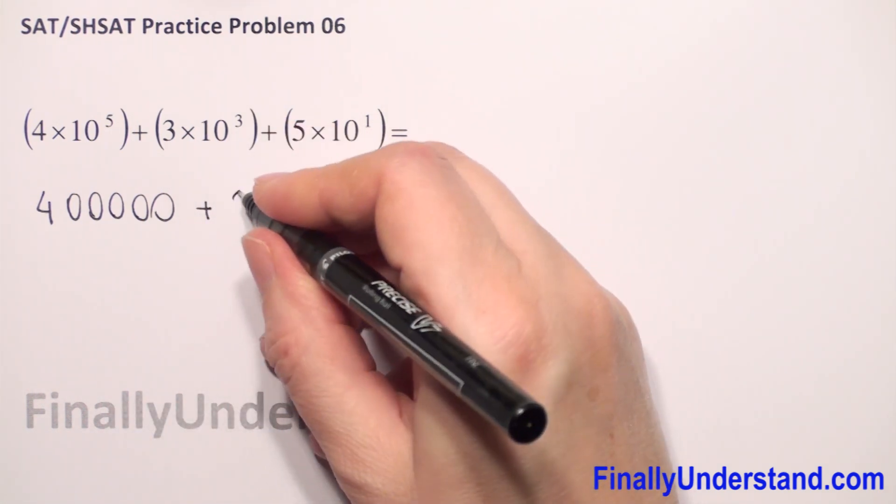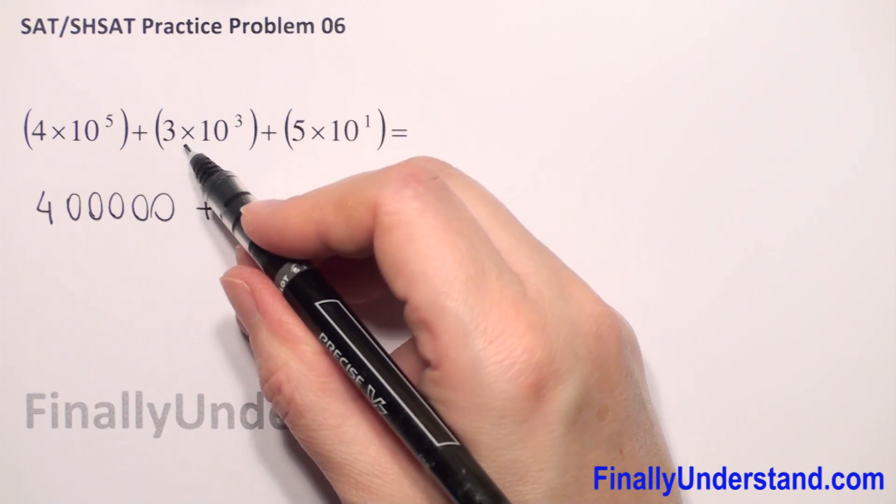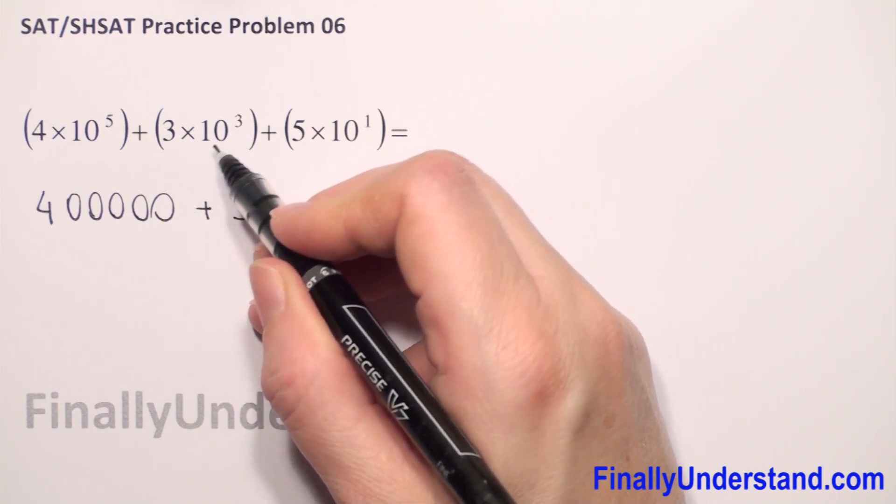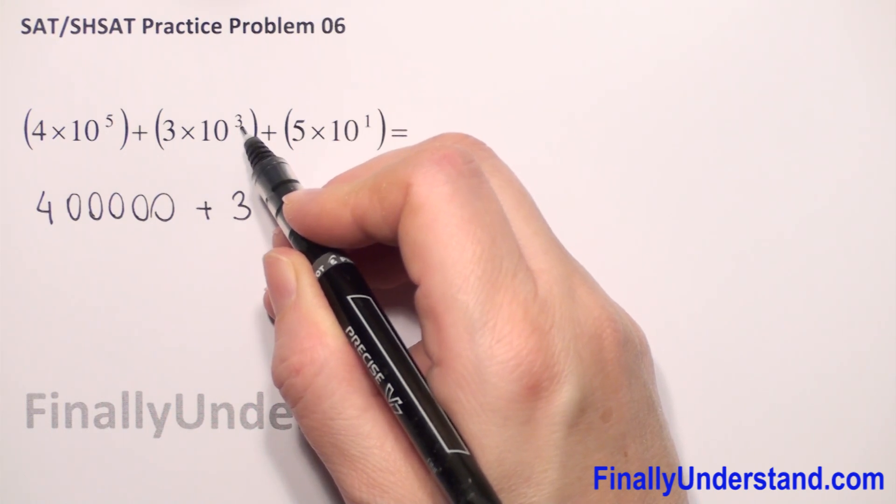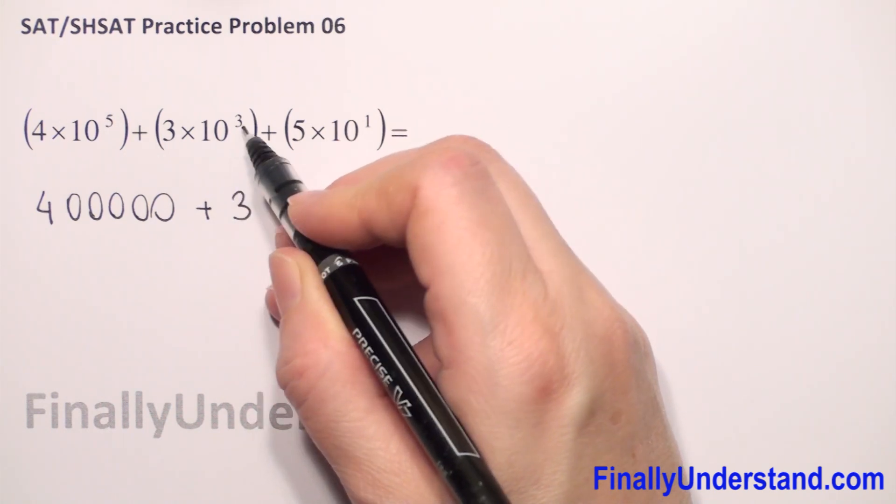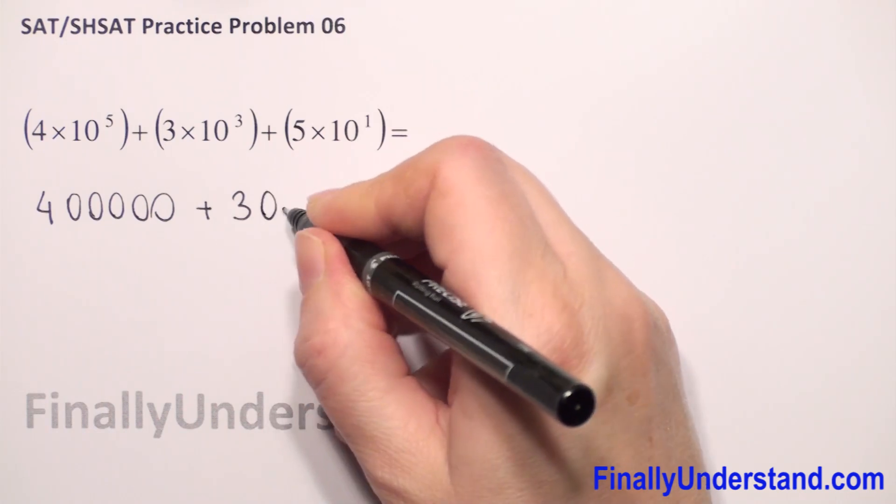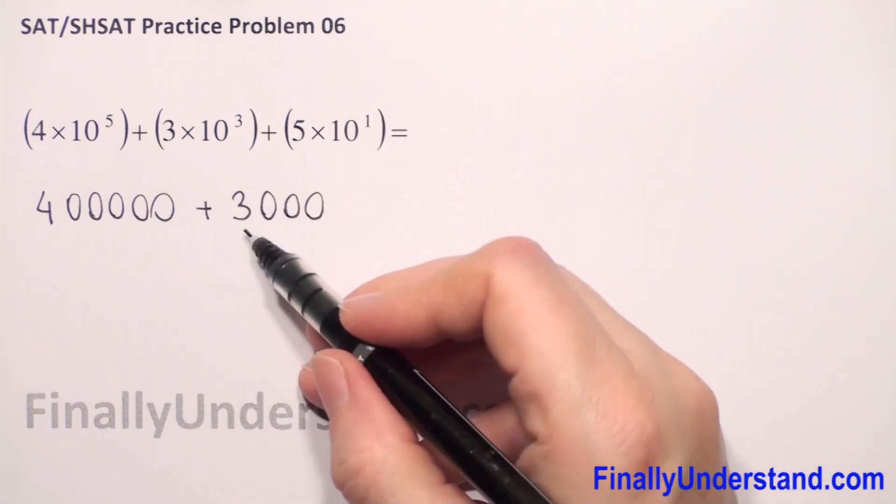Again, we copy 3. And again we have times 10 to the 3rd power, power of 10. So we have to write how many zeros? 3, because we have 10 to the 3rd power. 1, 2, 3. So we have 3,000.